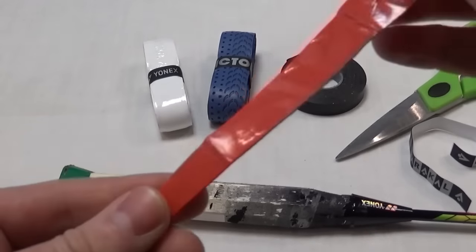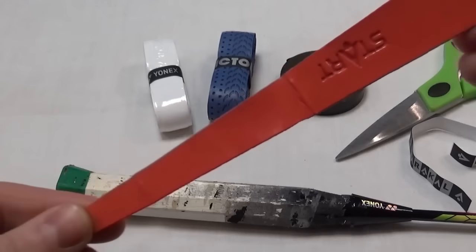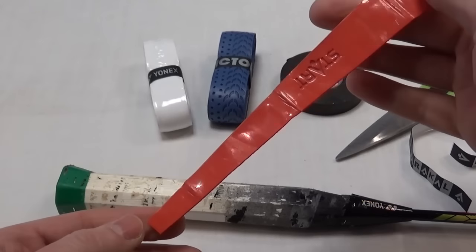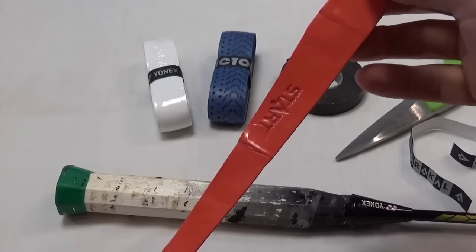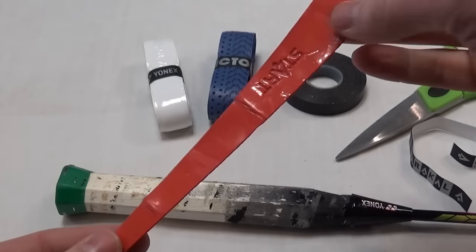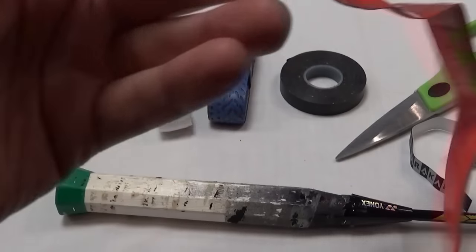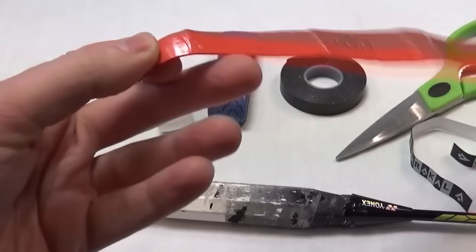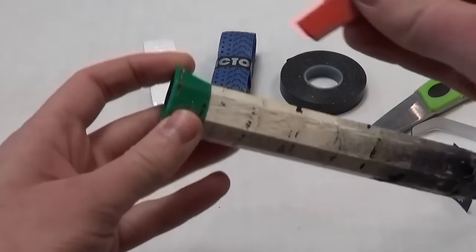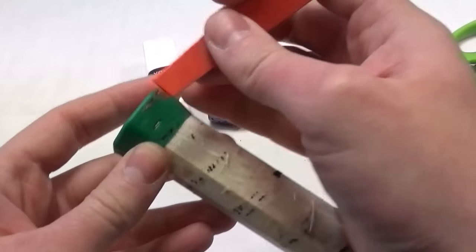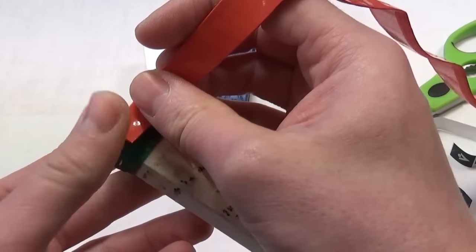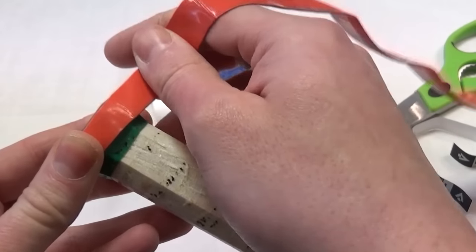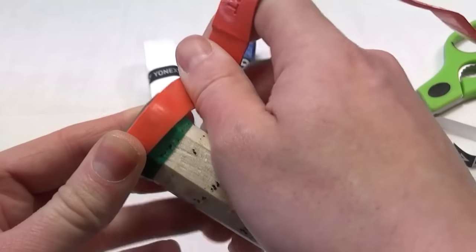Now each of these grips has a tapered end and you can see that it starts off thinner. The Caracal PU has a handy start written on one end. We're going to start down the bottom of the handle of the racket and apply the grip in the middle here right on the bottom of the handle.